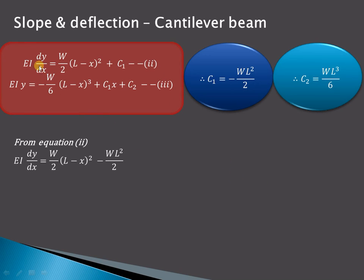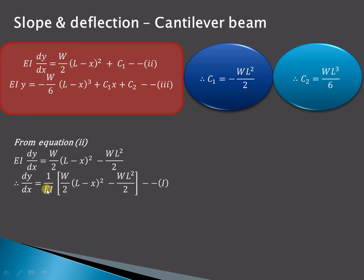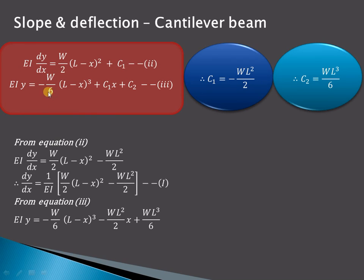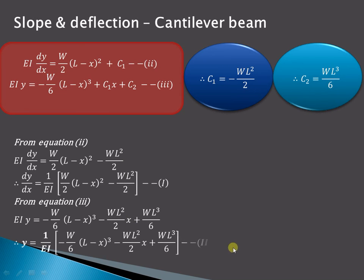From equation 2, EI dy/dx equals W/2·(L minus x)² plus C1, and substituting C1 equals minus WL²/2, the slope equation is: dy/dx equals (1/EI) times [W/2·(L minus x)² minus WL²/2]. From equation 3, substituting C1 and C2, the deflection equation is: y equals (1/EI) times [minus W/6·(L minus x)³ minus WL²/2·x plus WL³/6].